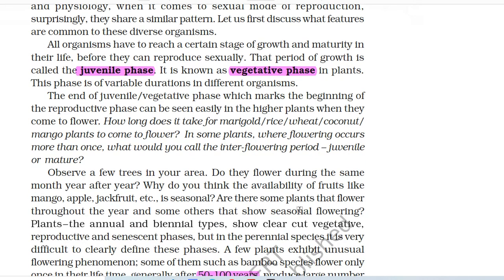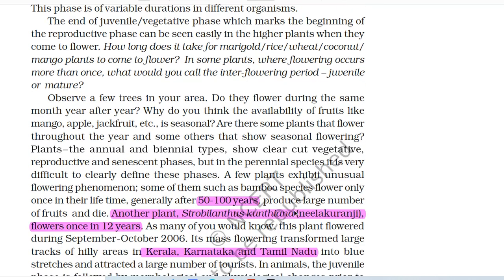All organisms have to reach a certain stage of growth and maturity before they can reproduce sexually. That period of growth is called the juvenile phase, known as the vegetative phase in plants. This phase is of variable duration in different organisms. The end of juvenile or vegetative phase marks the beginning of the reproductive phase, which can be seen easily in higher plants when they come to flower. How long does it take for marigold, rice, wheat, coconut, and mango plants to come to flower? In plants where flowering occurs more than once, what would you call the interflowering period — juvenile or mature?